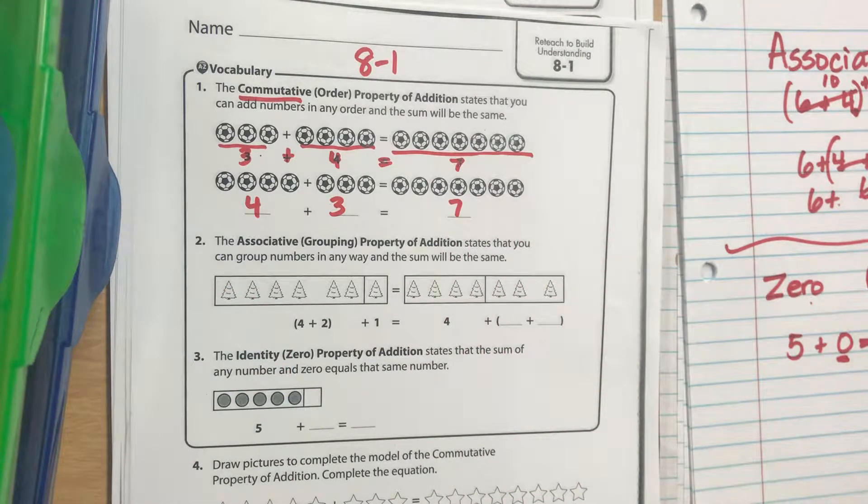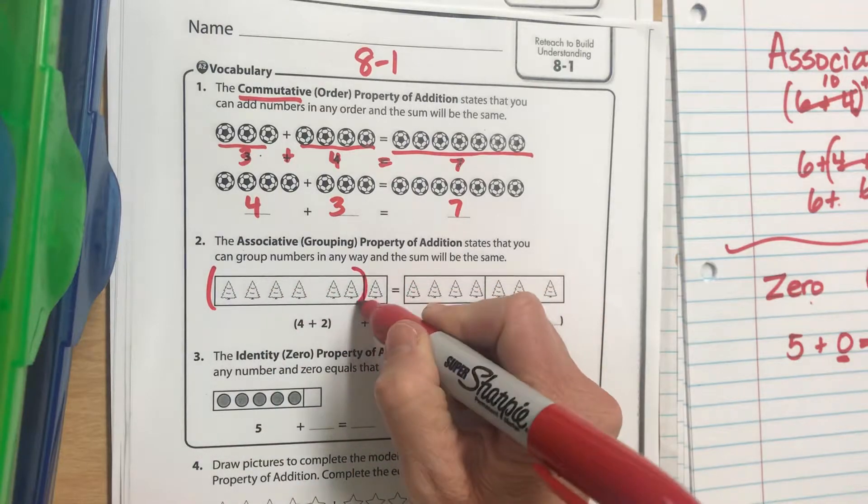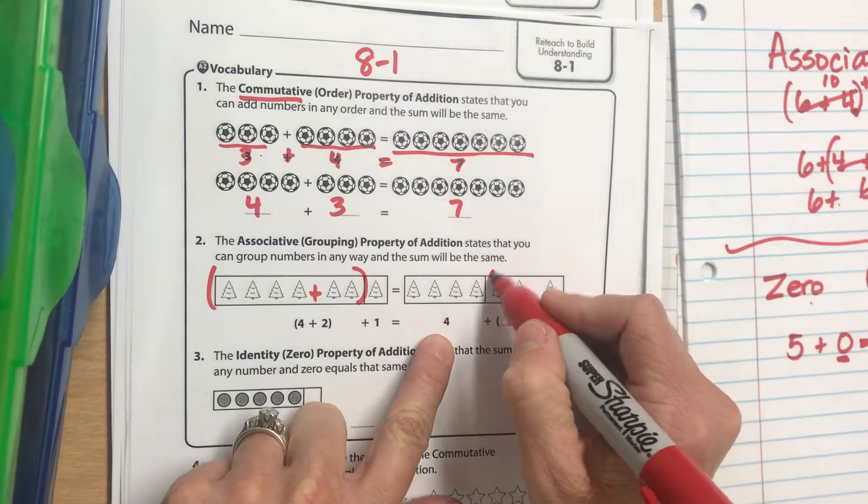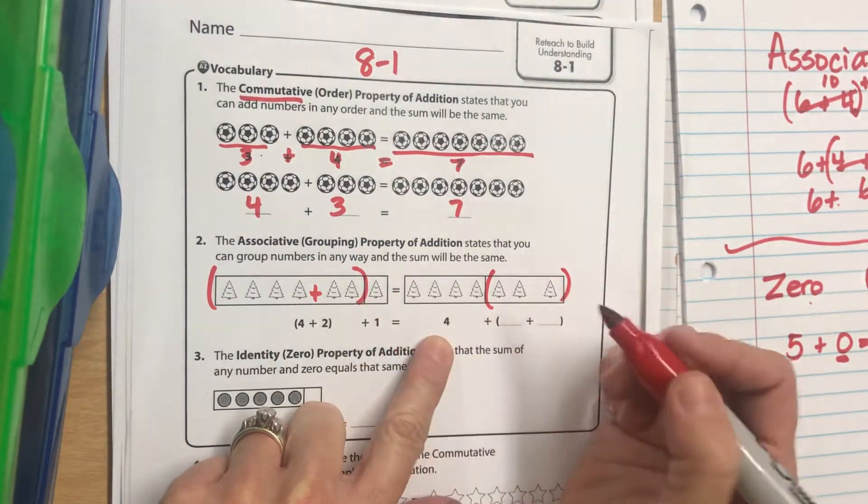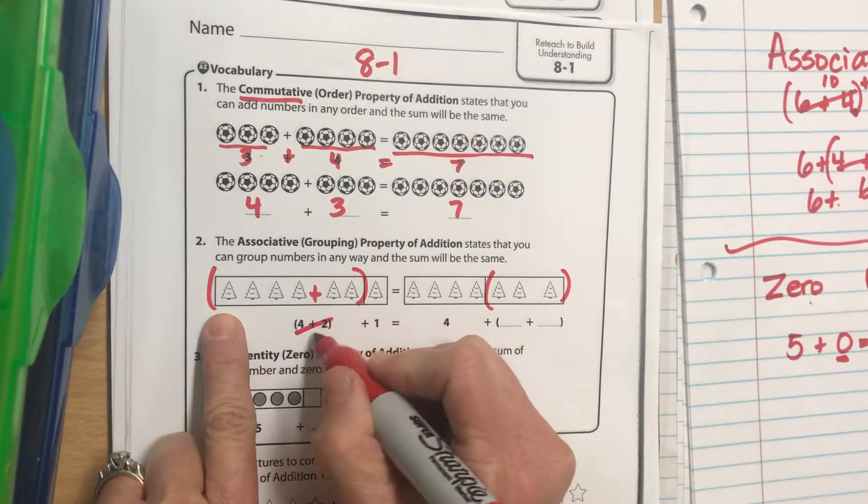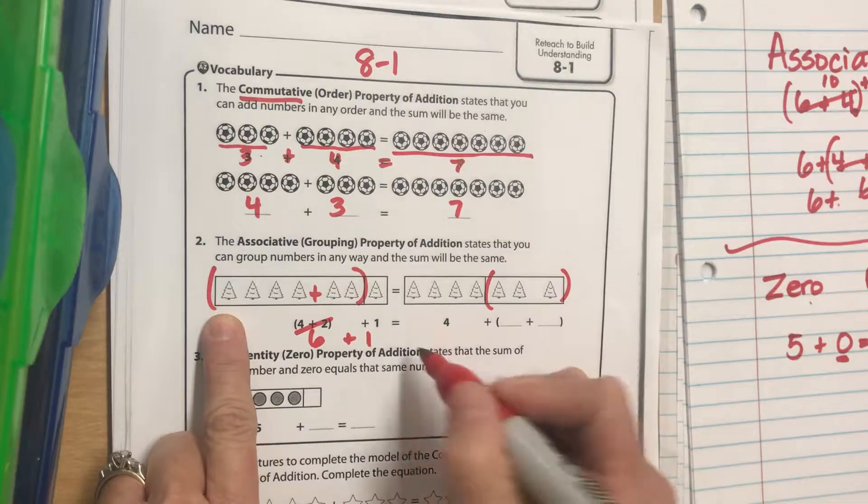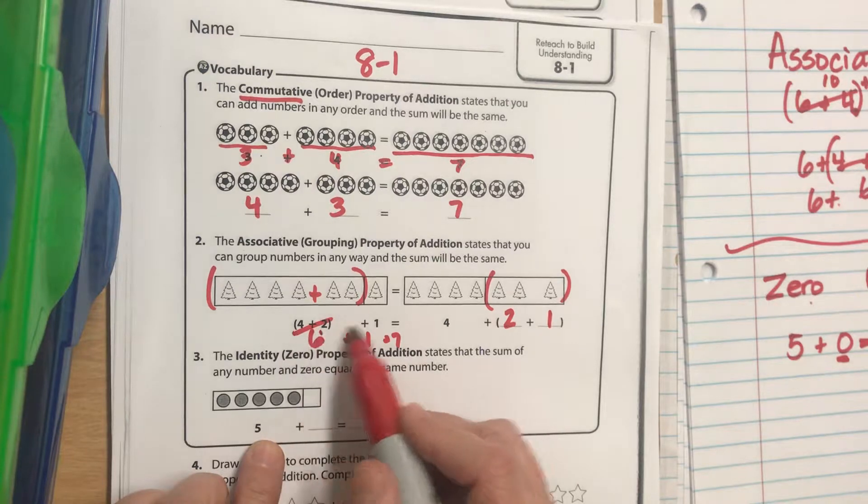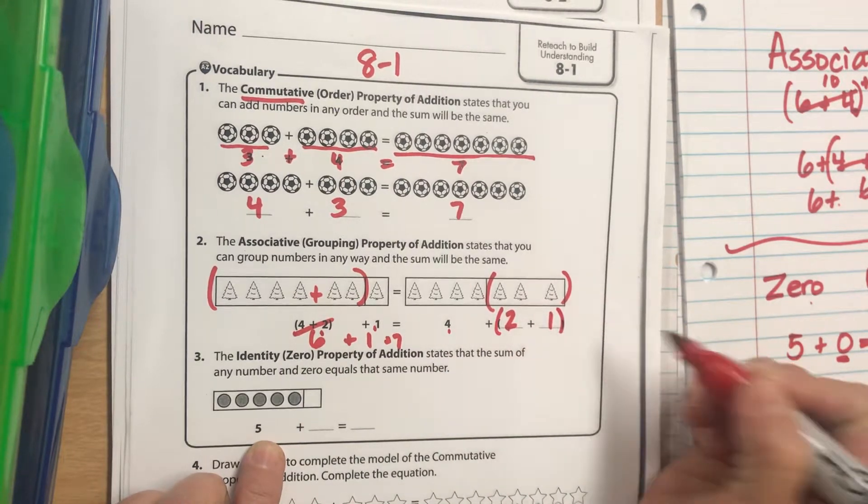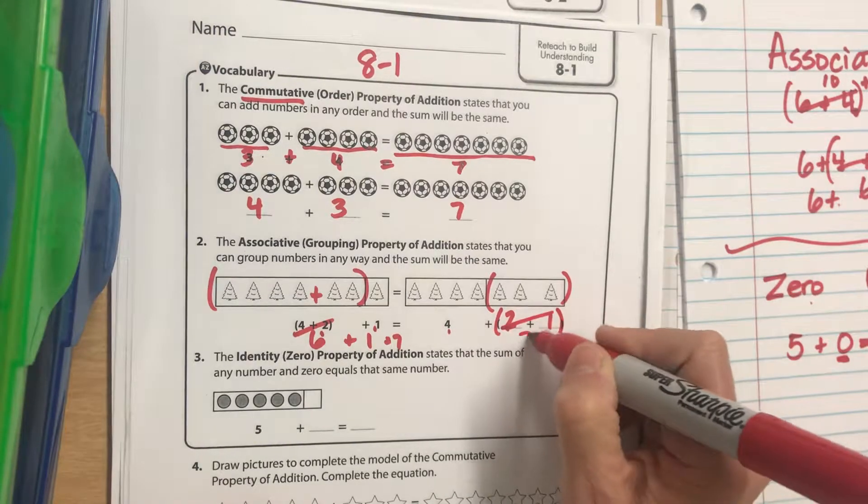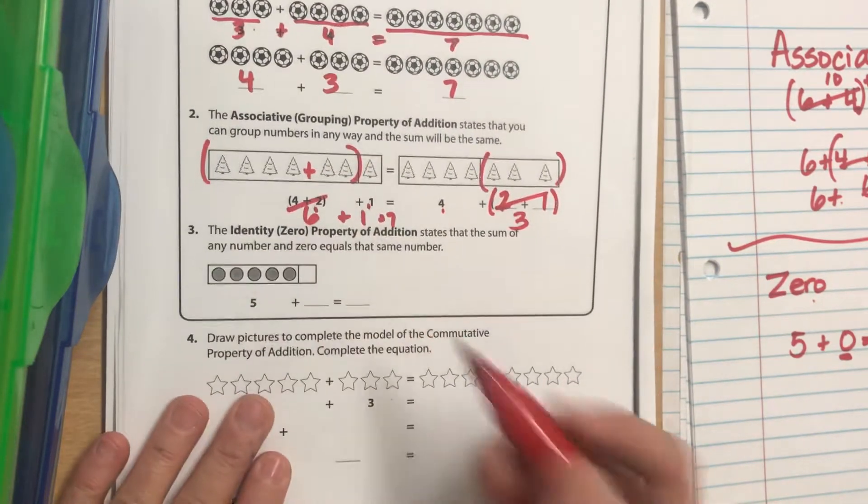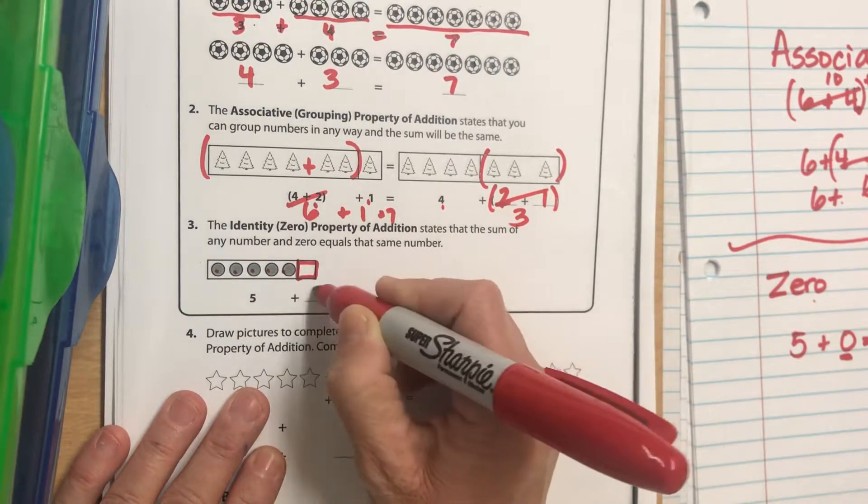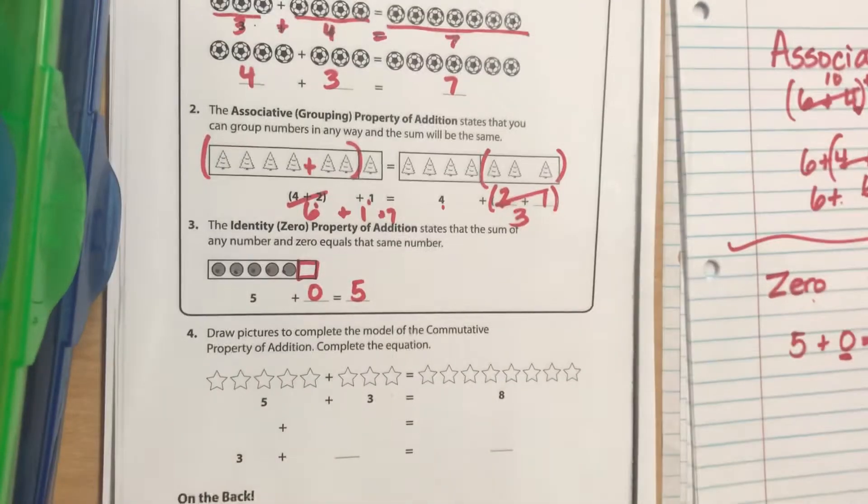Associative means I can group them. We got 4 plus 2 - here's our 4 and our 2 - plus one more, or we can leave our 4 outside and we can do our 2 plus 1. So 4 plus 2 equals 7, is the same as 4 plus 2 plus 1. I'm just changing where I put my parentheses, so 4 plus 3 is also 7. For zero property: 5 plus 0 is still 5. I can add 0 to any number and it's going to stay the same.